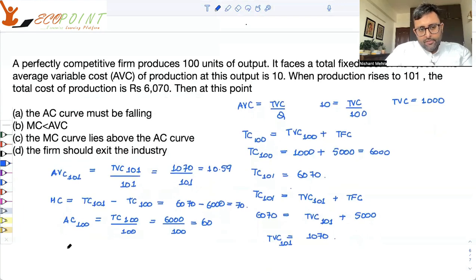What is the average cost of 101 units? Total cost of 101 units upon 101 units. 6,070 upon 101, that comes out to be 60.09. Now you check.